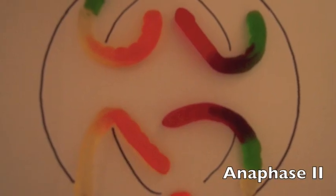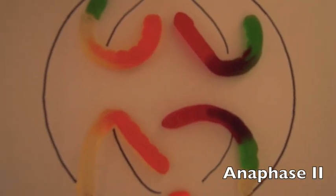Here, in anaphase II, the homologous sister chromatids separate and move away from each other on the metaphase plate.